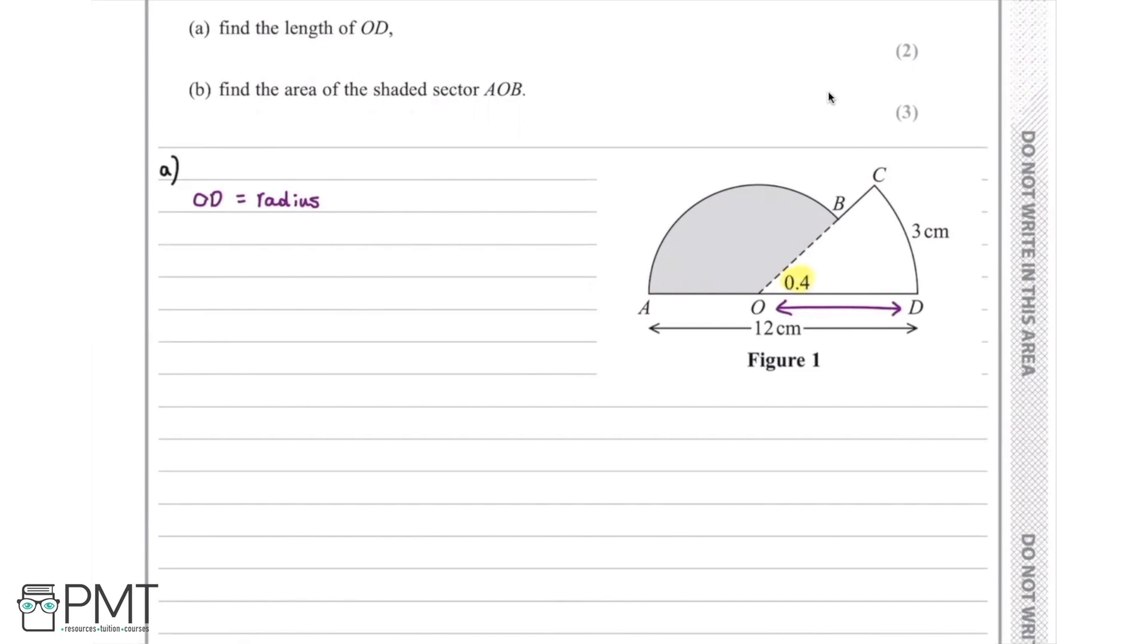And then we have the arc length is equal to 3 centimeters. So we can put this together and make use of the formula s equals r theta. S is the arc length, which equals 3 centimeters. R is the radius, that's what we want to find out. And theta equals 0.4 radians.